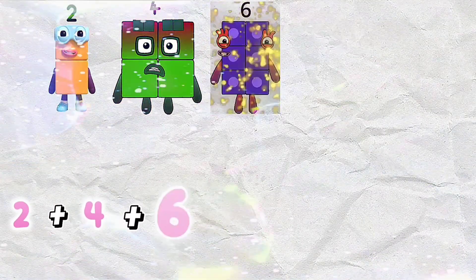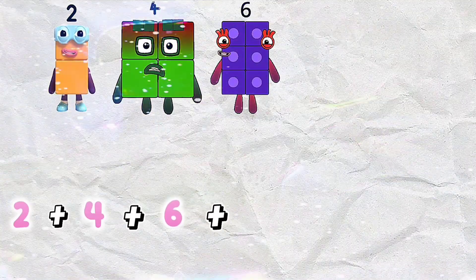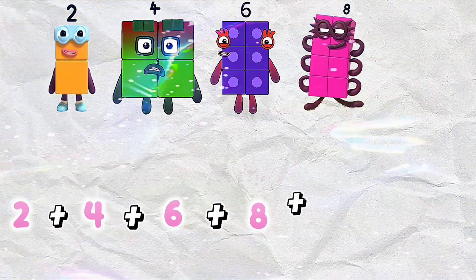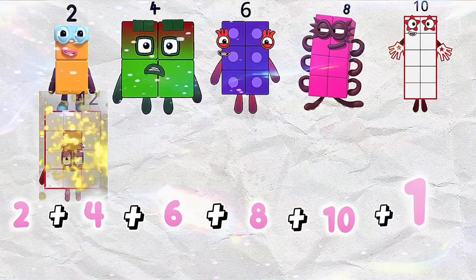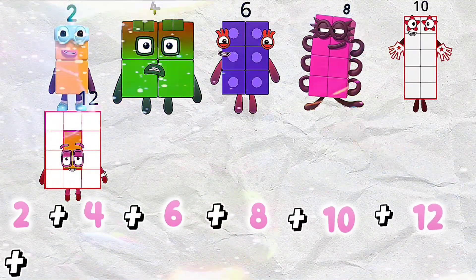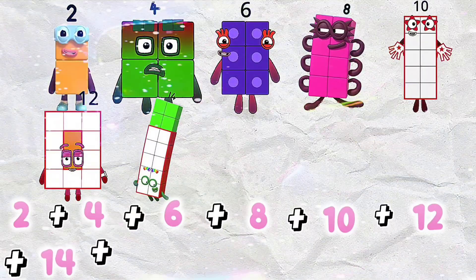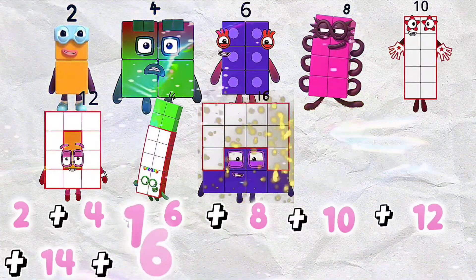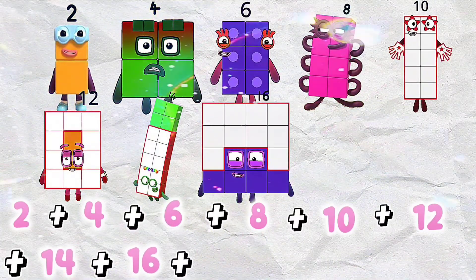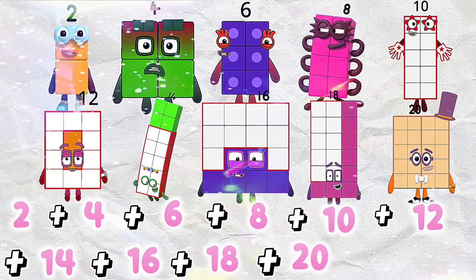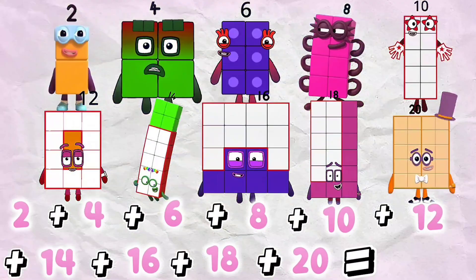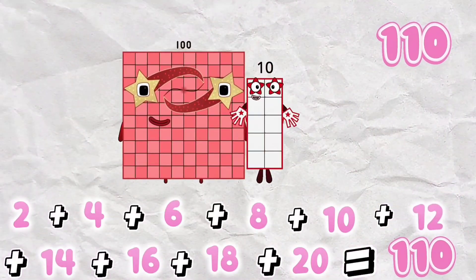2 plus 4 plus 6 plus 8 plus 10 plus 12 plus 14 plus 16 plus 18 plus 20 is equals to 110.